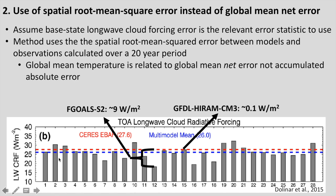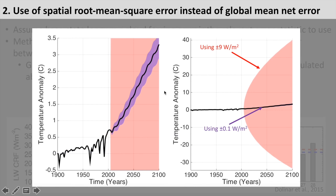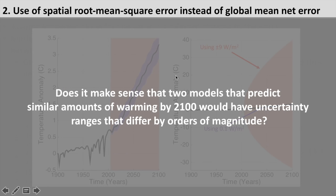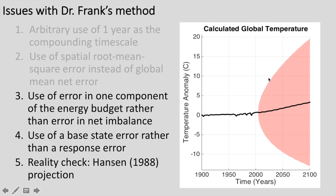But some models are quite good: the GFDL model has an error of only 0.1 watts per meter squared in mean net long-wave cloud forcing relative to satellites. If we compare the uncertainty ranges from putting these different errors into Dr. Frank's method, using plus or minus 9 watts per meter squared gives a ridiculously large range of about plus or minus 40 degrees Celsius out to 2100, while using 0.1 watts per meter squared produces an error range not even visible on the temperature scale. Does it make sense that two models predicting roughly the same warming by 2100 would have uncertainty ranges differing by orders of magnitude? This is further evidence the method is not as useful as advertised.